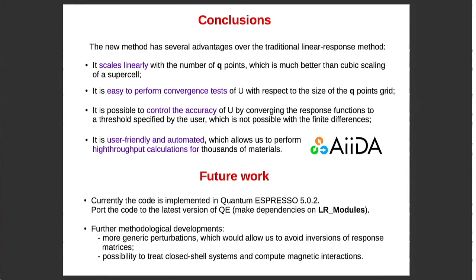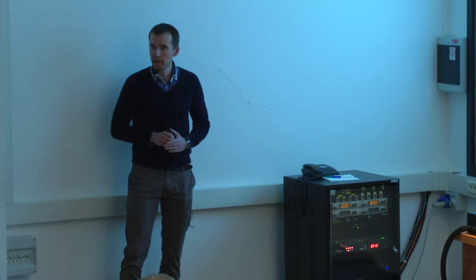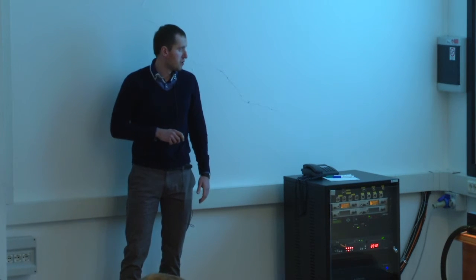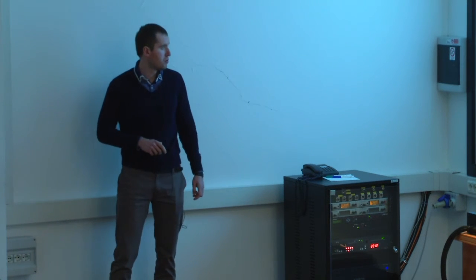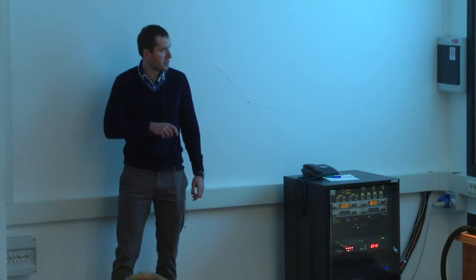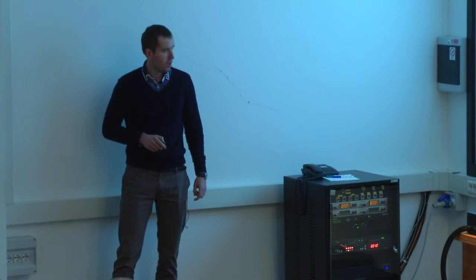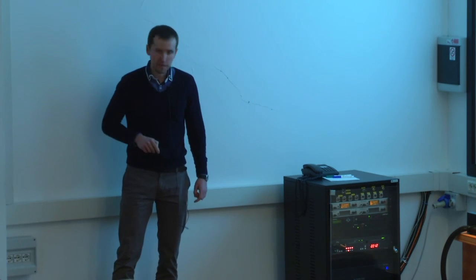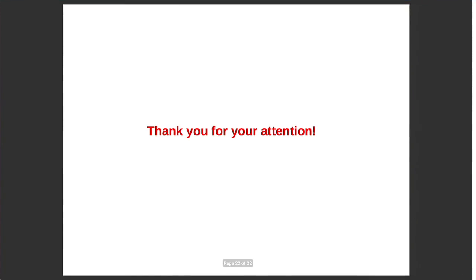In future we would like to port the code from the current version which is 5.0.2 to the latest version on SVN and profit from the existence of the LR modules and move all our dependencies from the phonon code to the LR modules. And then some other methodological developments. We would like to try other more generic ways of defining the perturbation which would allow us to avoid inversions of chi naught and chi, and this would allow us also to study closed-shell systems and compute magnetic excitations. So closed-shell systems currently is a problem for traditional method, but we would like to try to address this issue with the new method. With this I would like to thank you for your attention.